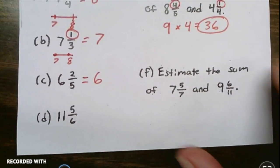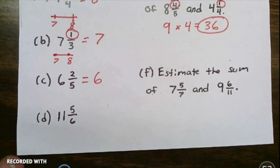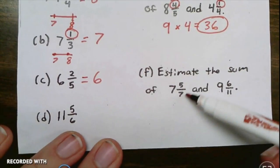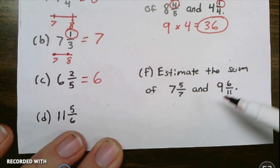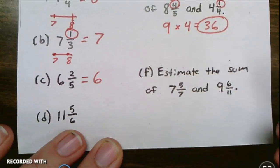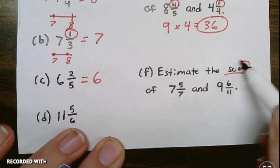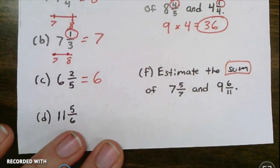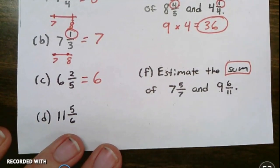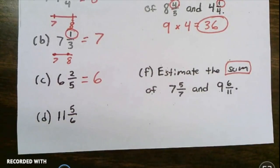Here's F. I want you to do this one on your own. Estimate the sum. First you're going to round this number and this number to be whole numbers, and then because it is asking for the sum, you are going to add those numbers together. Go ahead and get to work.